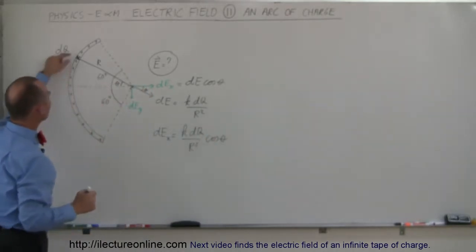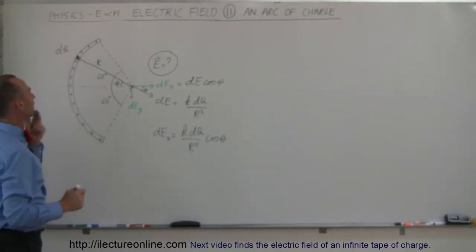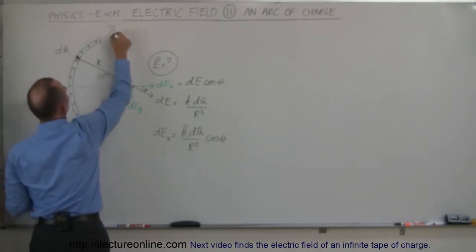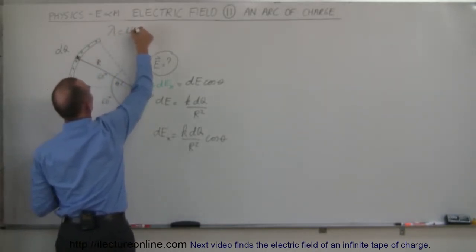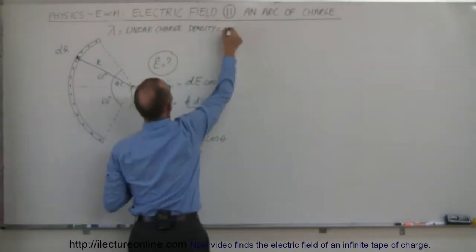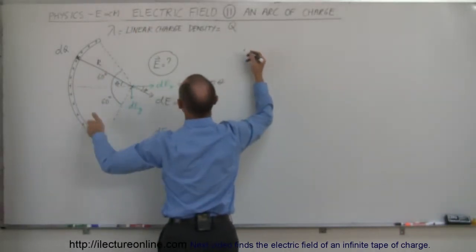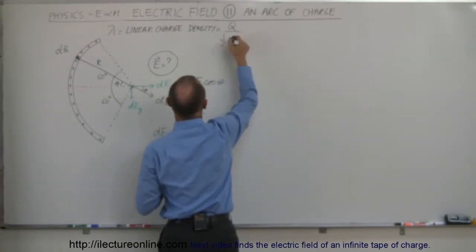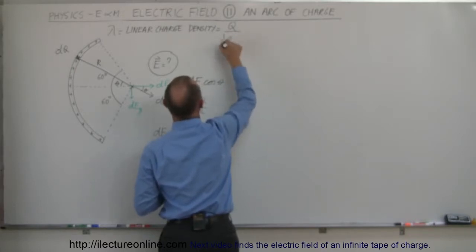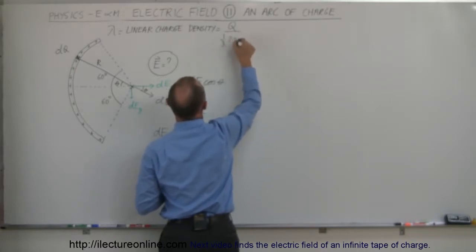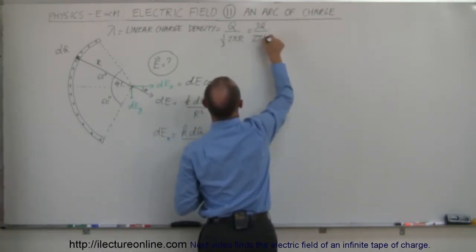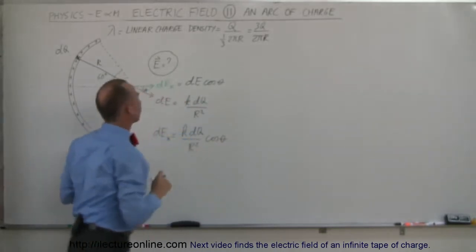Now, how much charge is DQ? We have a linear charge density — let's call that lambda. Lambda equals the total charge placed on the arc divided by the length of the arc, which is one-third of the circumference: one-third times 2π times R. So the linear charge density is 3Q divided by 2πR.